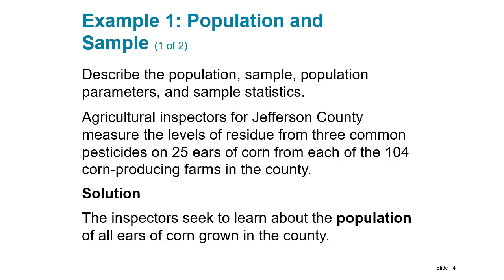Here is a simple example. Agricultural inspectors for Jefferson County measure the levels of residue from three common pesticides on 25 ears of corn from each of the 104 corn-producing farms in the county. We want to describe the population, the sample, the parameters, and the statistics.